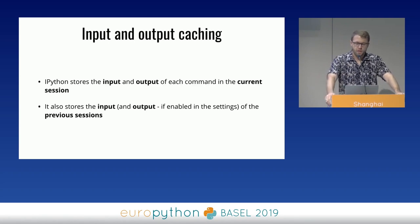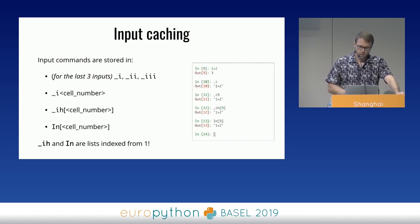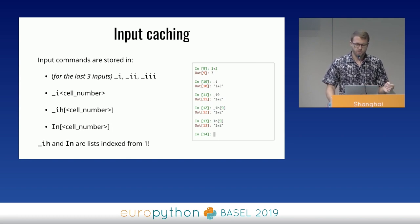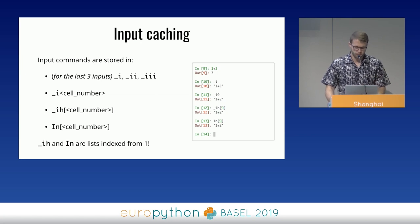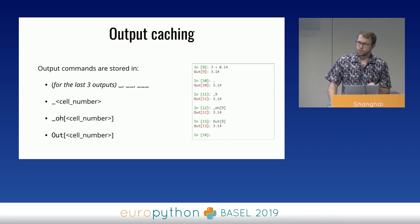IPython stores the input and output of each command you run in the current session. It will also store the input of previous sessions, and if you enable it in the settings, it will store the output as well. If you want to access the cached input for a given cell, IPython will create a global variable for each input command, or you can use the `_ih` or `In` lists to access previous commands — just keep in mind those lists are indexed from one, not zero. The same applies to output caching, accessible through global variables or two dictionaries.